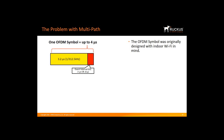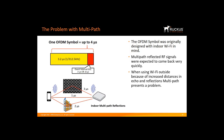The OFDM Symbol was originally designed with indoor Wi-Fi in mind. In an indoor environment, multipath reflected RF signals were expected to come back very quickly. The pre-11AX OFDM Symbol was composed of a data portion that is 3.2 microseconds long with a guard interval of 0.4 or 0.8 microseconds. When using Wi-Fi outside, because of increased distances, echo, and reflections, multipath presents a problem. Long OFDM Symbol helps to correct this problem.